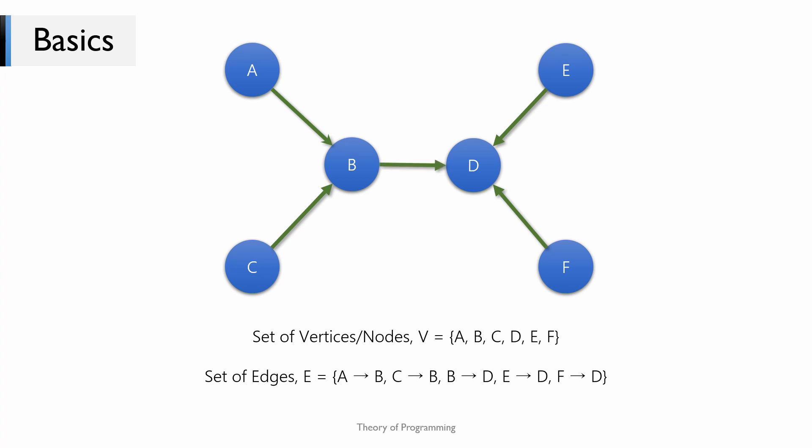Generally, each vertex represents an entity and each edge represents the relationship between the entities. I have named the vertices as A, B, etc. just to introduce you to the concept of graph data structure, but these nodes and vertices can represent more meaningful things to solve some very interesting problems.